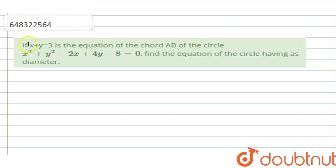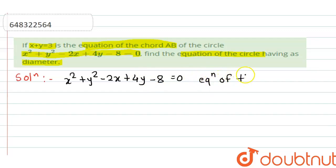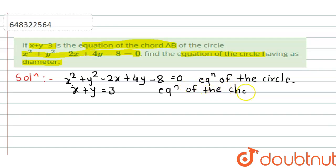Hello everyone. Our question says that if x plus y is equal to 3 is the equation of the chord AB of the circle x² + y² - 2x + 4y - 8 = 0, find the equation of the circle having AB as a diameter. There are two equations given: the circle equation and the chord AB.